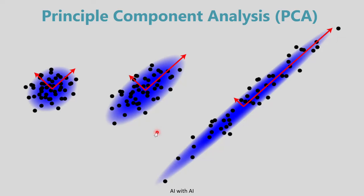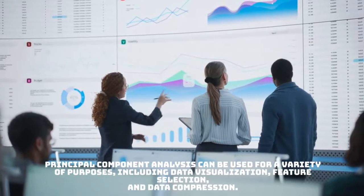Let's look at how PCA really works and how it reduces dimensions. With two-dimensional data, PCA identifies two components: PC1, the principal component line drawn along the data capturing the most variation, and PC2, a second line orthogonal to PC1 that captures the maximum remaining variance. The first principal component captures the most variation in the data, and the second captures variance orthogonal to the first.